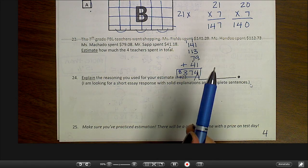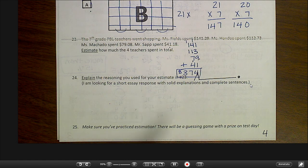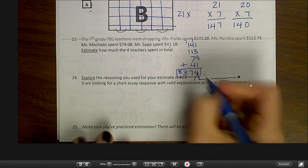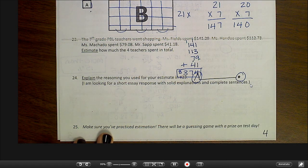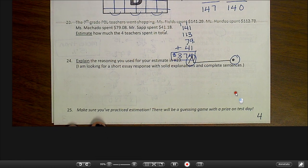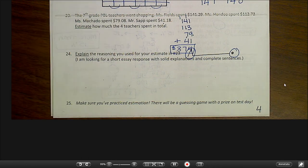And then for number 24, you're going to need to write on this one. Explain the reasoning used for your estimate in number 23. I'm looking for a short essay response with solid explanations and complete sentences. So remember that means we're starting with a capital letter, ending with a period, and you're explaining it in such a way that I can understand the process you went through. And if I wanted to repeat it, I could do that using your directions. And number 25, I don't want to give too much away, but there will be a guessing game, like a little contest on test day. And you're going to want to make sure that your estimation skills are really good so that you can win that contest.